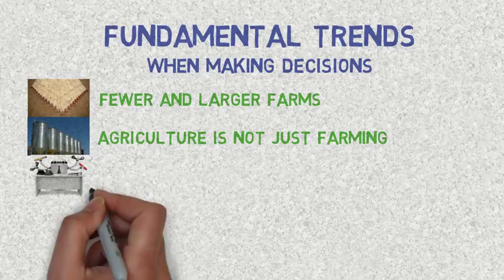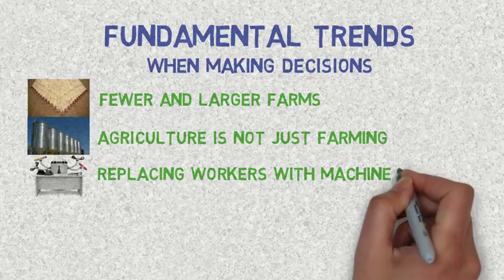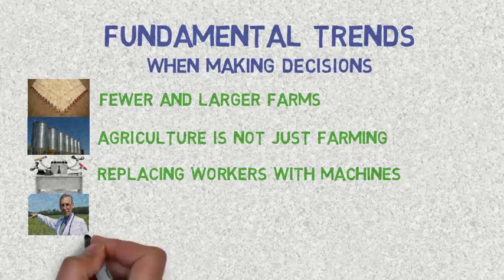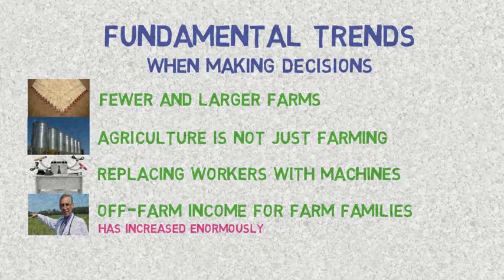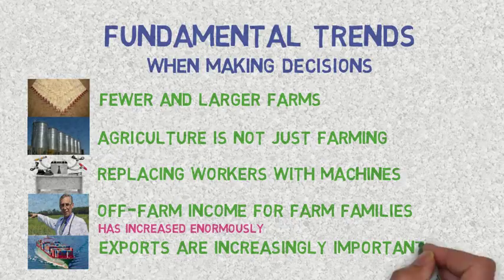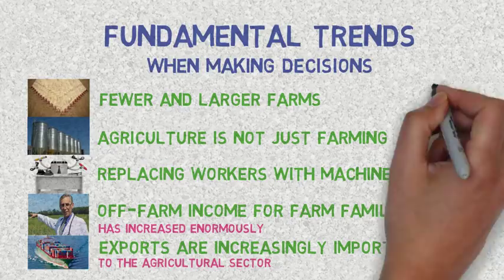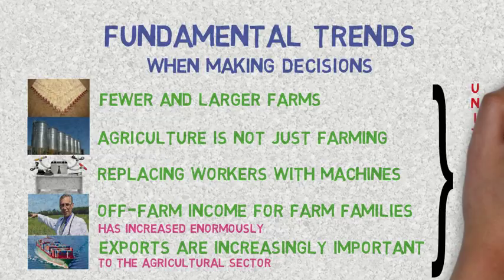It is also evident that machines are replacing workers. Many farmers rely not only on income from agricultural sources, but also on income from non-farm jobs or investments. A doctor, for instance, might invest part of his money in his farm. Another important trend is a result of globalization — today, most countries sell a great part of their production to other countries. These trends occur in the United States, but it seems reasonable to assume that some of them might also be happening in Brazil.